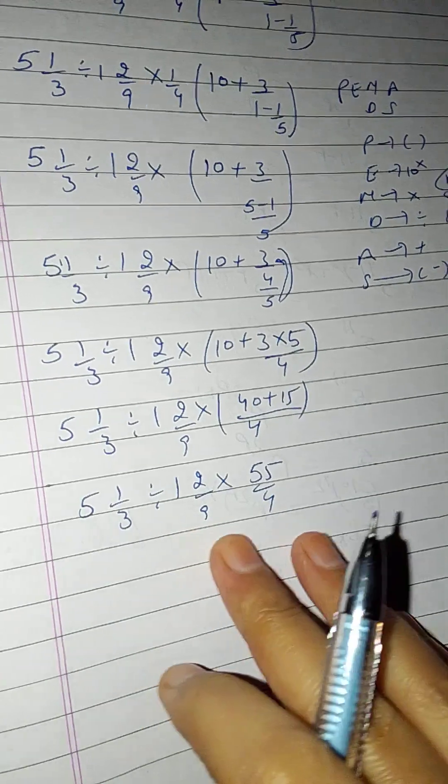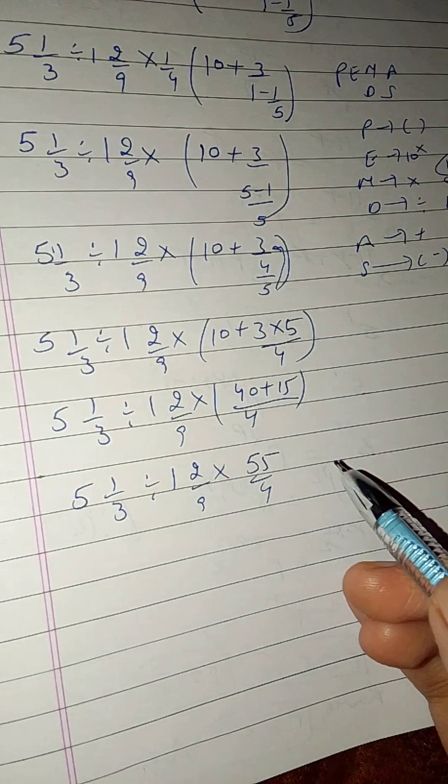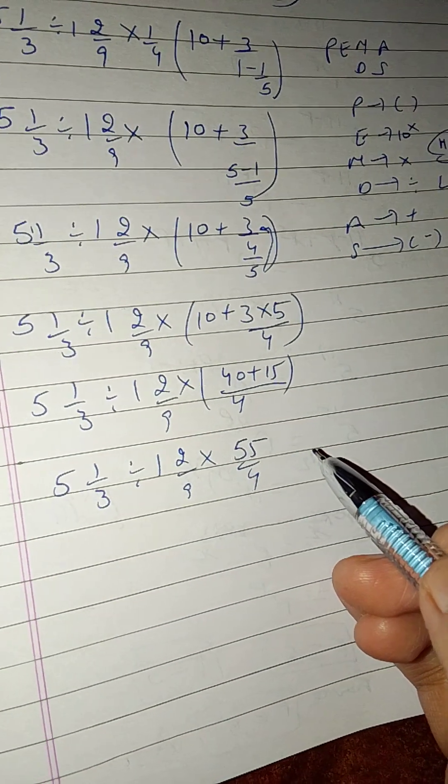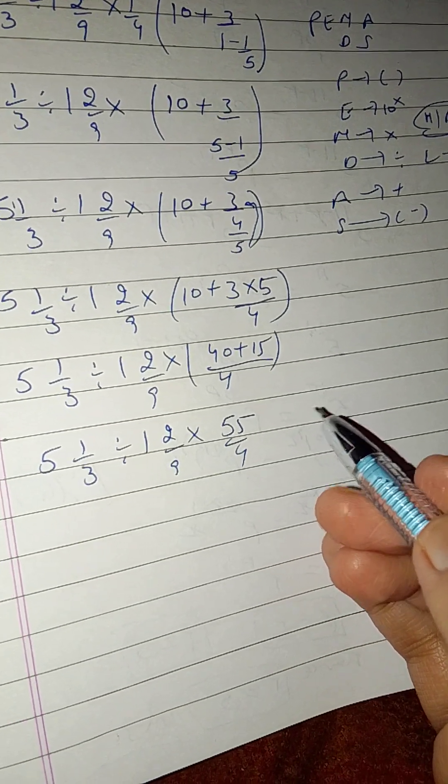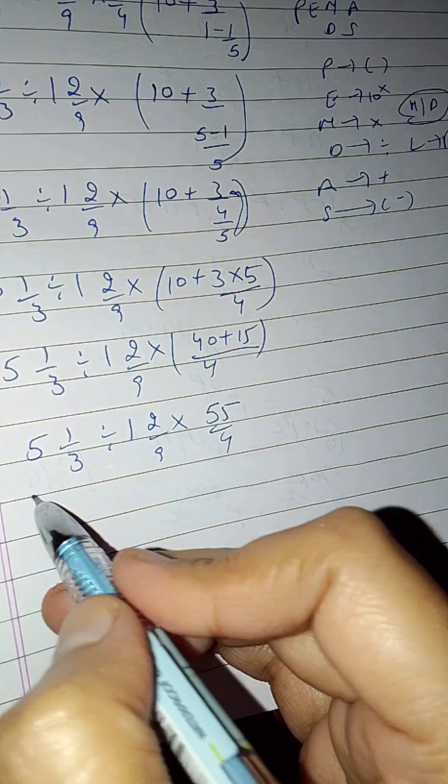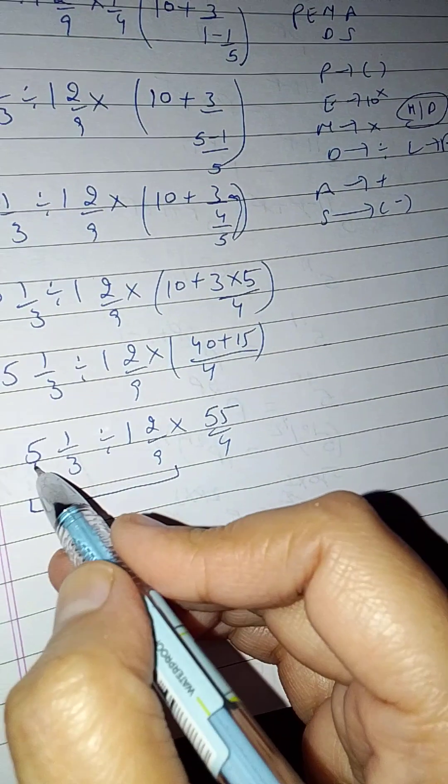Next step is exponent, but in this equation there's no exponent. Then multiplication and division, but multiplication and division are of equal priority and we go left to right. So first we solve this.